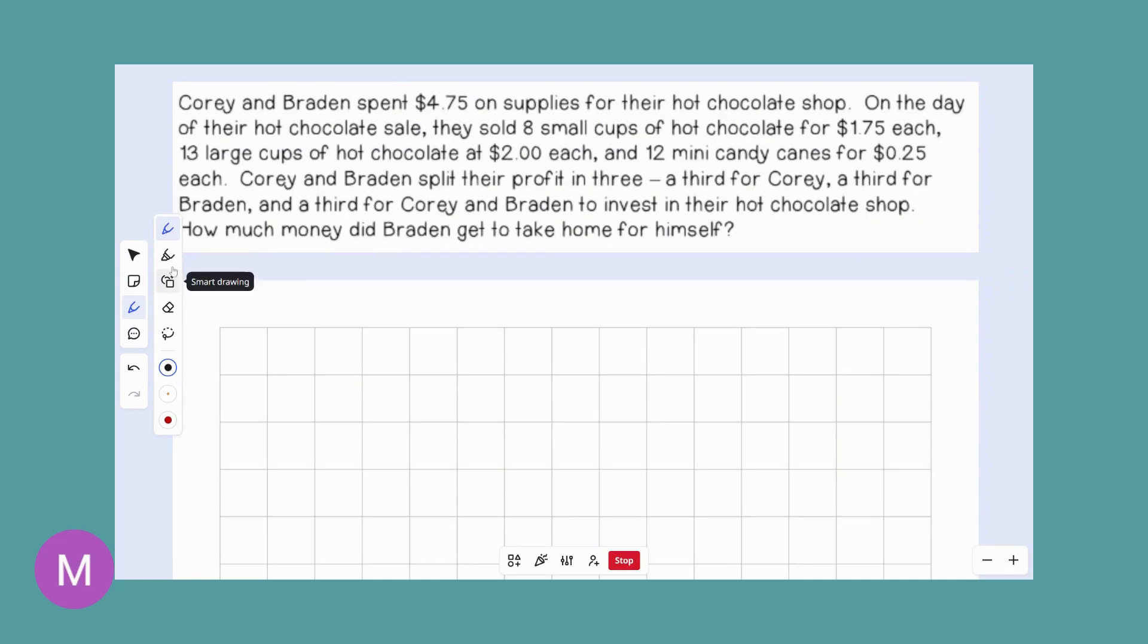I'm going to go ahead and get a highlighter for numbers. So Corey and Brayden spent $4.75 on supplies for their hot chocolate shop on the day of their hot chocolate sale. They sold eight small cups of hot chocolate for $1.75 each. So I'm going to use some different colors here. This $4.75 had nothing else going with it yet. So we're going to have to just put that on hold for a second, but I'm going to come in. I'm going to say, okay, we're talking now about eight small cups that they sold for $1.75 each.